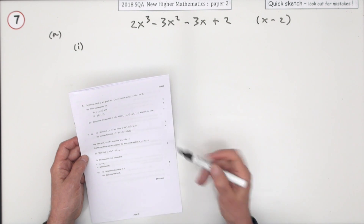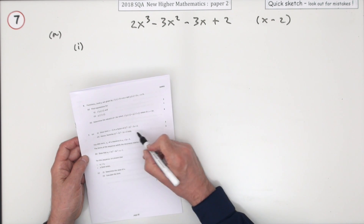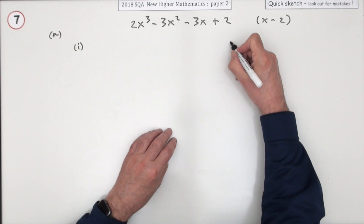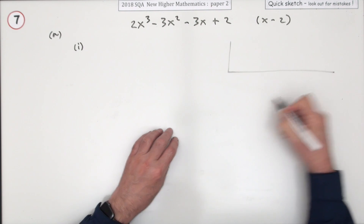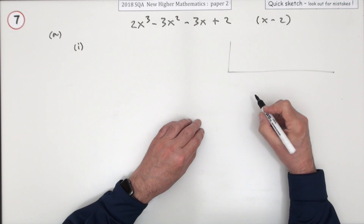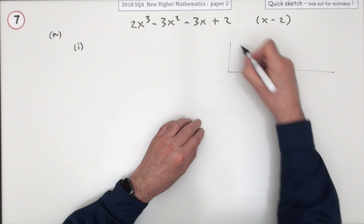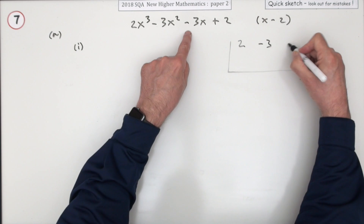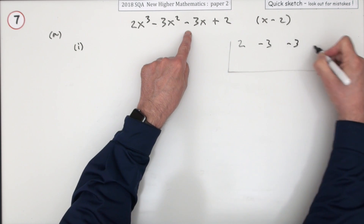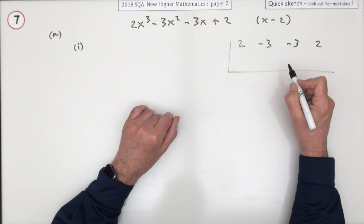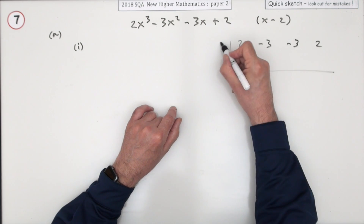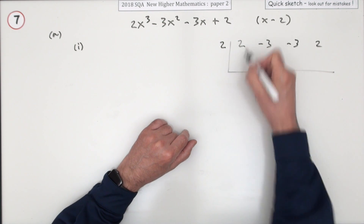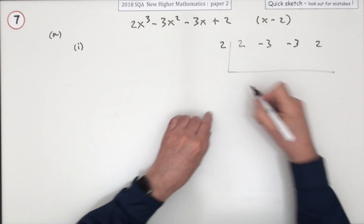The first part is: show that x minus 2 is a factor, for 2 marks. The simplest way is to go through your synthetic division. Put down those coefficients — they're all there. And if x minus 2 is a factor, that means 2 is a zero of that expression. Feed it through.